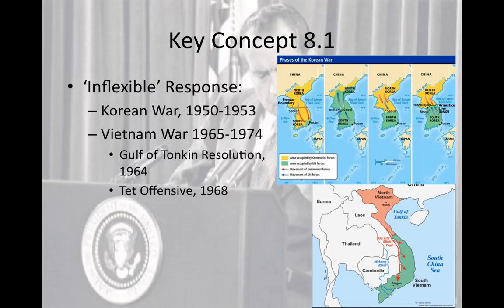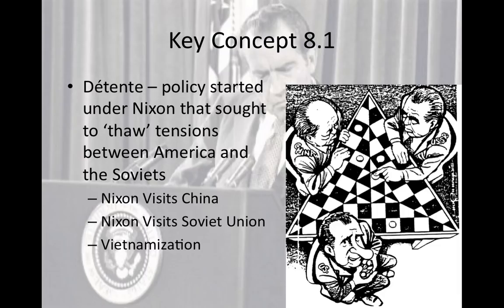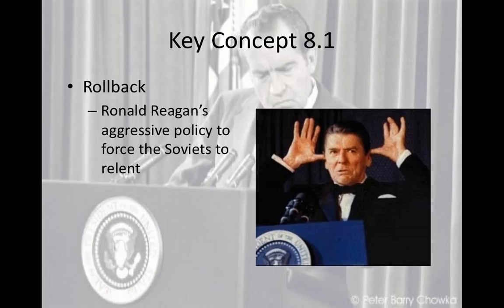Richard Nixon's policy, detente, basically means to thaw tensions between the Soviets and Americans. Nixon visited China and the Soviet Union, trying to play them against each other — each worrying what Nixon was doing in the other country. Nixon was a master at foreign policy, very patient, allowing him to play the two powers off against one another. Detente showed it didn't work in 1979 when the Soviets invaded Afghanistan, right before Ronald Reagan came to power promising aggressive action and policy toward the Soviets.